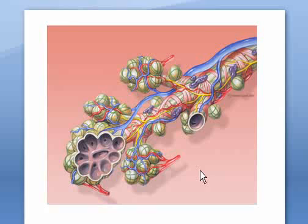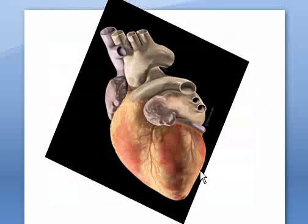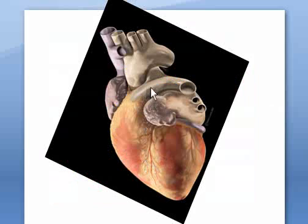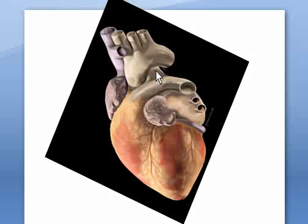I'll show you where the pulmonary artery is. This is the main pulmonary trunk and it's dividing into the left pulmonary artery here. And this is the right pulmonary artery.